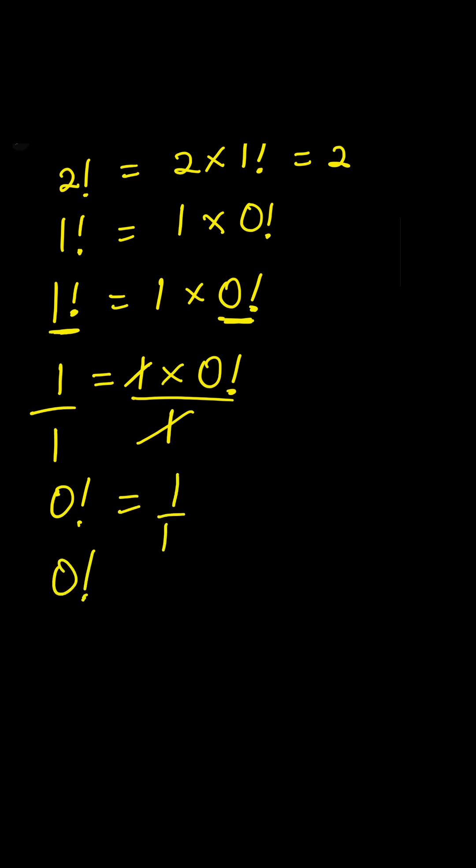One cancels one, then you'll be left with zero factorial is equal to one over one. So zero factorial is therefore equal to one. Mind blown! Like and share this with someone who needs to see this, and follow me for more cool math tricks.